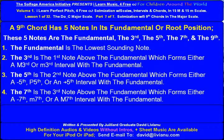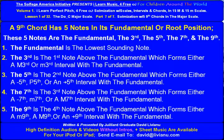The 7th is the 3rd note above the fundamental which forms either a diminished 7th, minor 7th, or a major 7th interval with the fundamental. The 9th is the 4th note above the fundamental which forms either a minor 9th, a major 9th, or an augmented 9th interval with the fundamental.